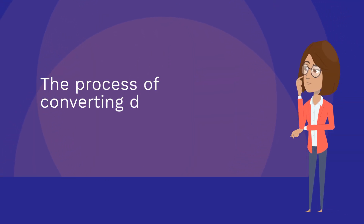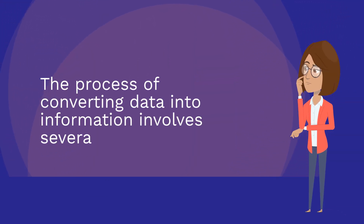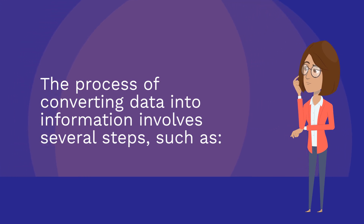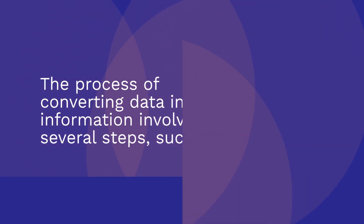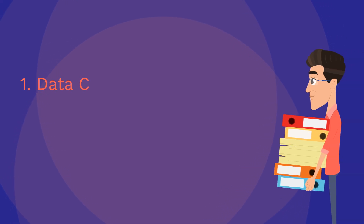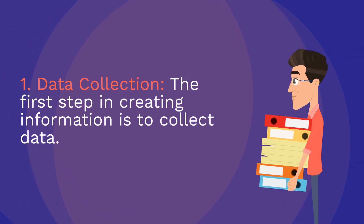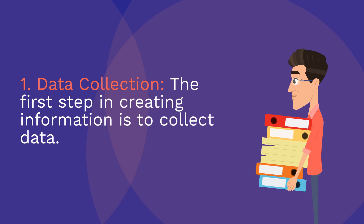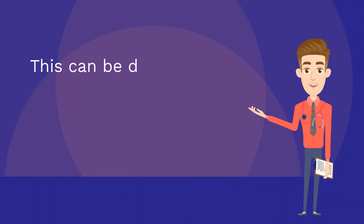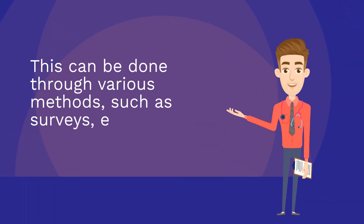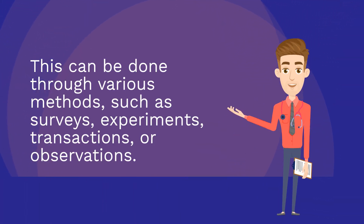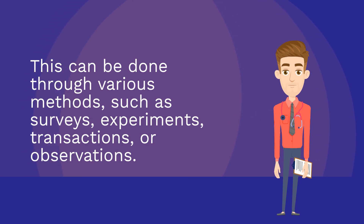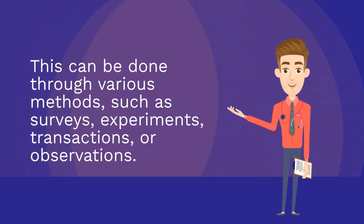The process of converting data into information involves several steps. Step 1: Data collection. The first step in creating information is to collect data. This can be done through various methods, such as surveys, experiments, transactions, or observations.